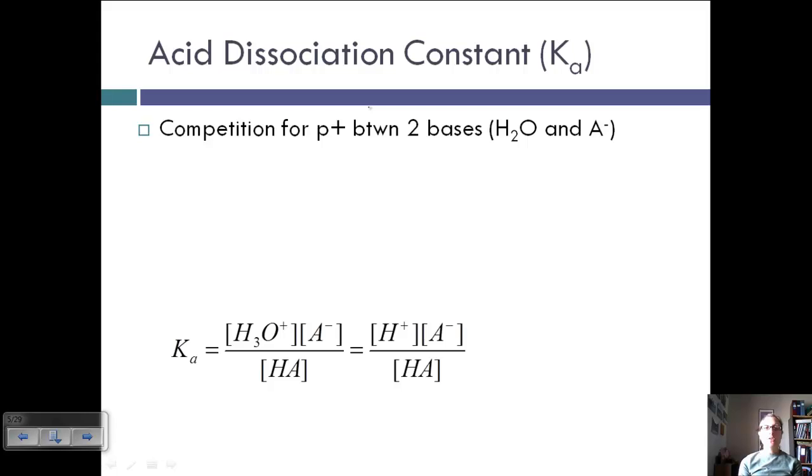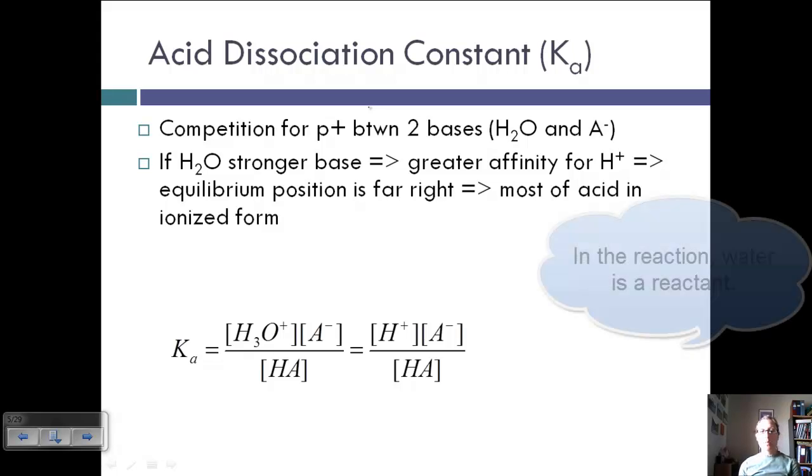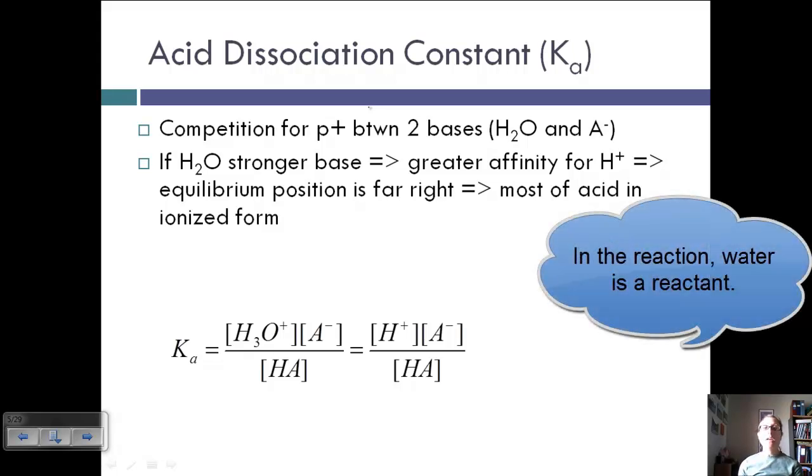Between the two bases, water and A-, there's competition for the protons. Depending on which one is the stronger base, that's going to determine the shift of equilibrium and which base gets the proton. If water is the stronger base, then that means it has a greater affinity for protons. It wants them more. This means that the equilibrium position is far to the right, because water is going to take those protons, so most of the acid is going to be ionized.